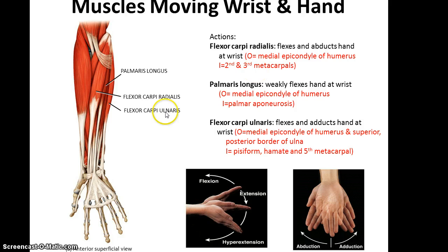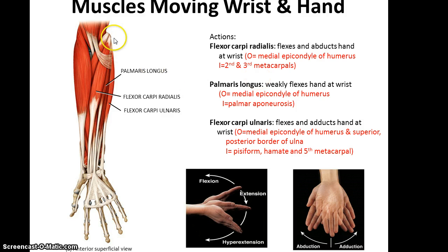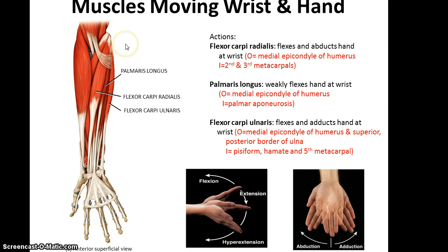Now, muscles that move the wrist and hand. We have the flexor carpi radialis, which flexes and abducts the hand at the wrist. Its origin is the medial epicondyle of the humerus, and its insertion is the second and third metacarpals. Then we have palmaris longus, which weakly flexes the hand at the wrist. Its origin is the medial epicondyle of the humerus, and its insertion is the palmar aponeurosis. Then the flexor carpi ulnaris, which also originates at the medial epicondyle of the humerus and on the superior posterior border of the ulna, and inserts into the pisiform, the hamate, and the fifth metacarpal.